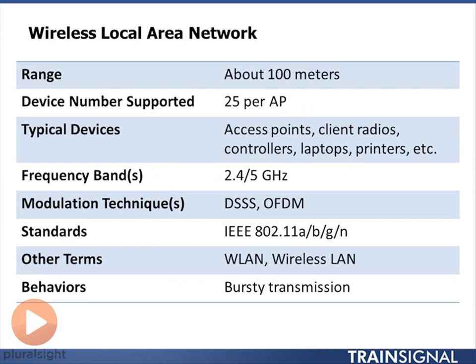802.11 uses modulation techniques called direct sequence spread spectrum (DSSS) and orthogonal frequency division multiplexing (OFDM). When you want really high data rates, you want to use an OFDM radio. When doing something like low data rate sensing networks, DSSS makes more sense because it's a lower-cost radio. The behavior is also bursty — you have multiple devices sharing a radio resource, taking turns sending data, so transmissions tend to be bursty rather than continuous 100% of the time.